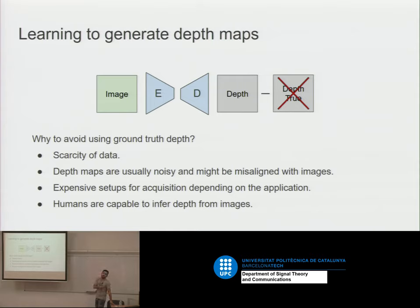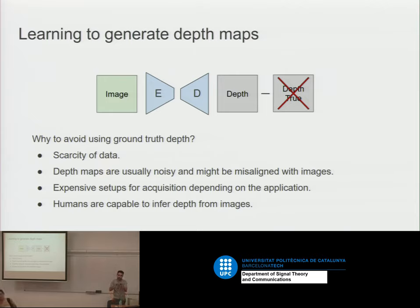Sometimes it's hard to acquire depth maps. Imagine you want to obtain depth maps from the street — you need to drive with a car, maybe with a LiDAR, something else. Expensive setups. You need to have very well-calibrated things to have aligned image and depth. And since humans are capable of more or less estimating depth, why not the machines? So it's an intuition that maybe we can do it with machine learning as well.